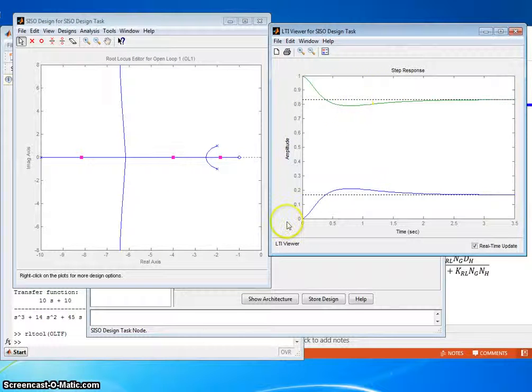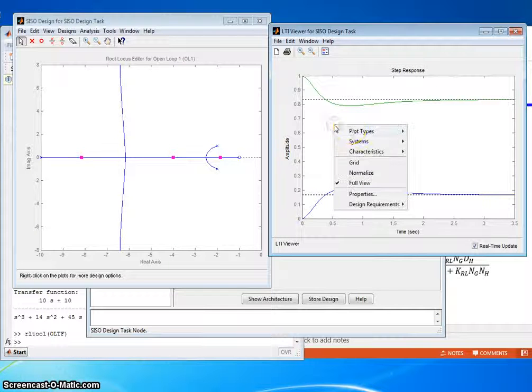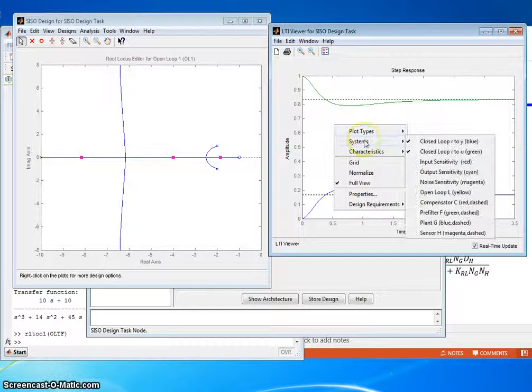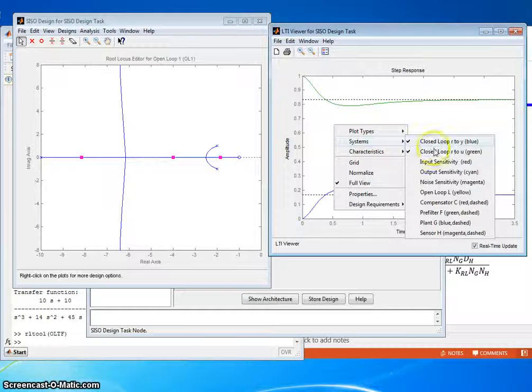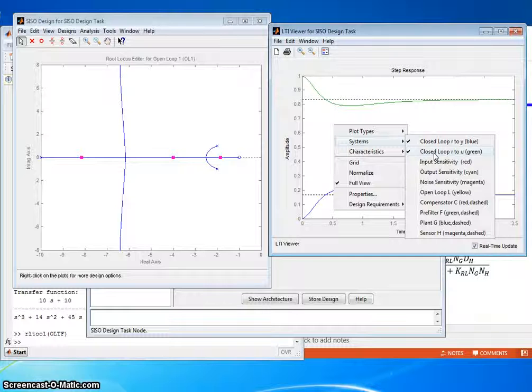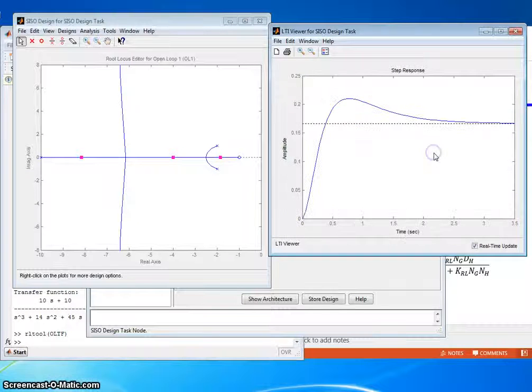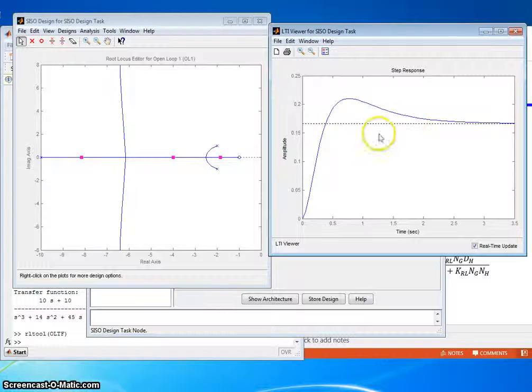Right now it has a green response and a blue response. If I right click and go to systems, the blue one is R to Y, which is the one I want. The green one is R to U. That may be interesting in a different application or lesson. So I'm going to go ahead and close that one. There's the step response we really want.